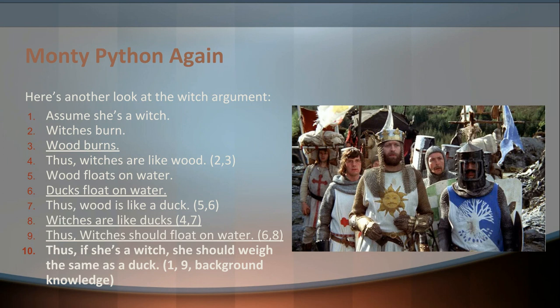Therefore, because witches are like ducks — that is, because witches are relevantly similar to ducks — and ducks float, we should expect witches to float. The basic argument is: ducks float on water, witches are like ducks and relevantly similar, thus witches should also float on water. There's a comparison between the subject (witches) and the analog (ducks), and because they're similar in a relevant way, conclusions about the subject can be drawn from the analog.